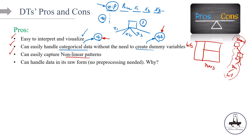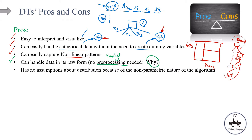Another advantage is that decision trees can handle data in its raw form — we don't even need to preprocess the data, meaning we don't need to do feature scaling, standardization, or normalization. We need to scale features whenever we're calculating some distance between observations, like in KNN or SVM. But for decision trees, we are not calculating any distance between observations, so the model can easily handle data in its raw form. Preprocessing won't hurt if you do it, but it isn't required. Finally, decision trees are nonparametric models, meaning we are not imposing any functional form or any assumption about the distribution of the features.